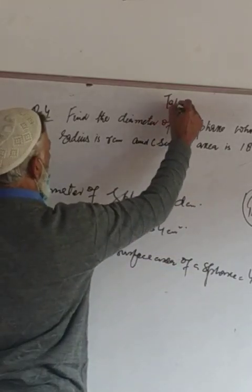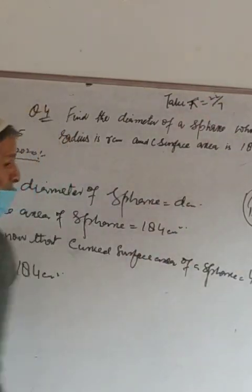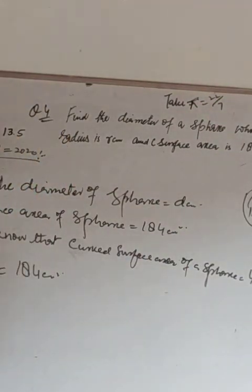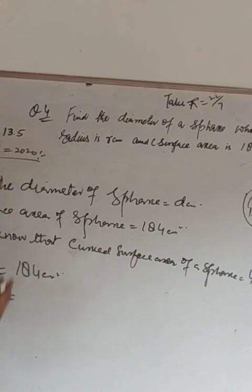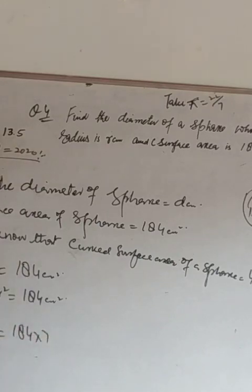Here, π is equal to 22 by 7. So 4 into (22/7) into r² is equal to 184 cm square. That gives 88r² equal to 184 multiplied by 7, which is 1288.